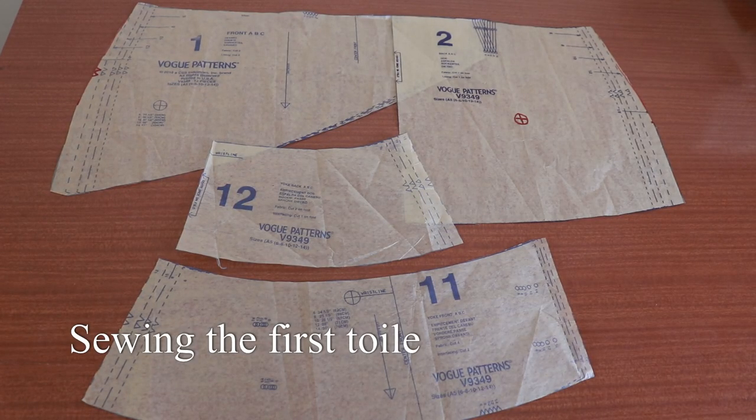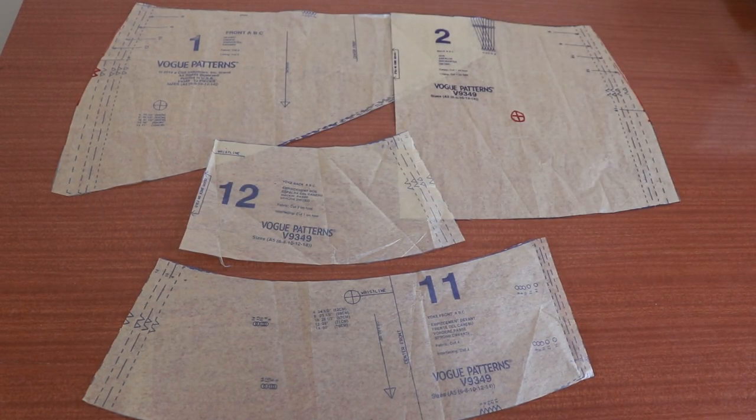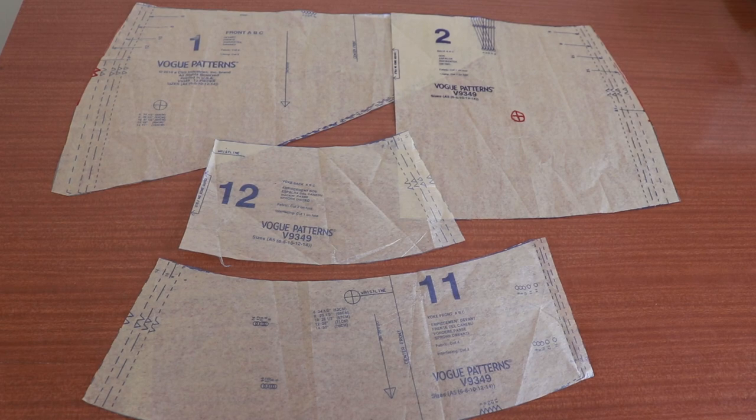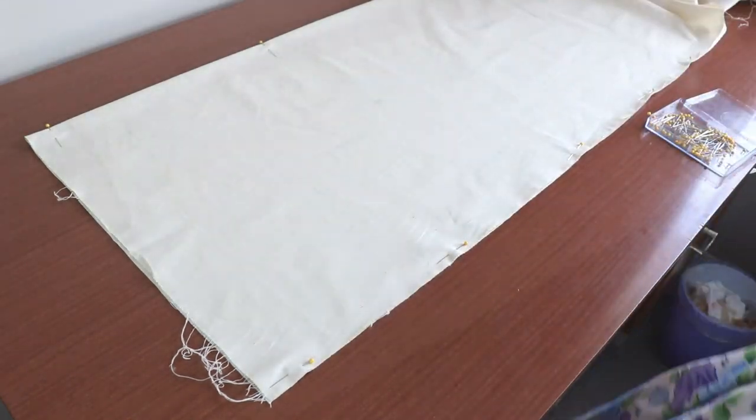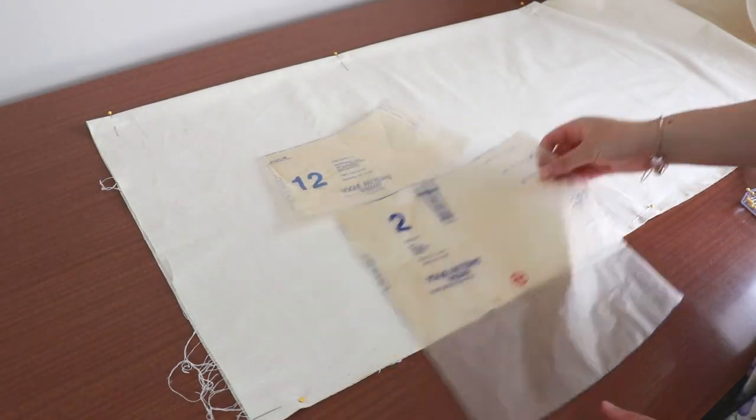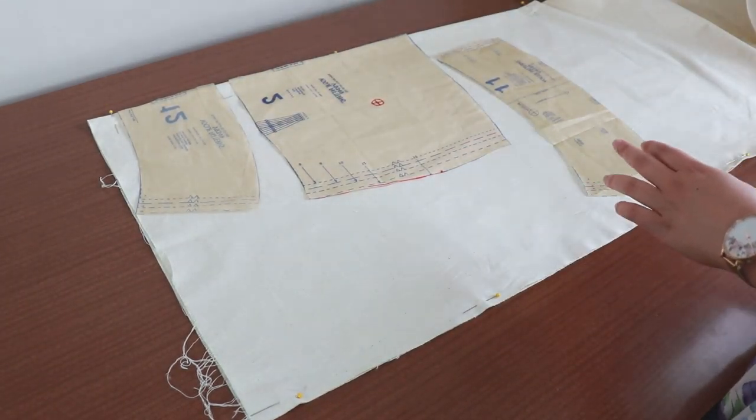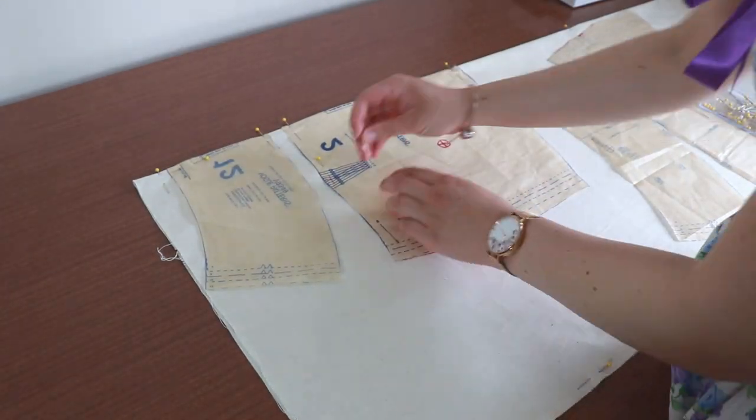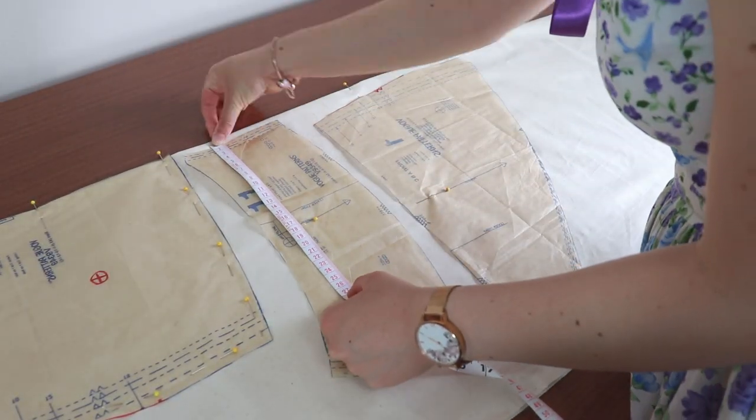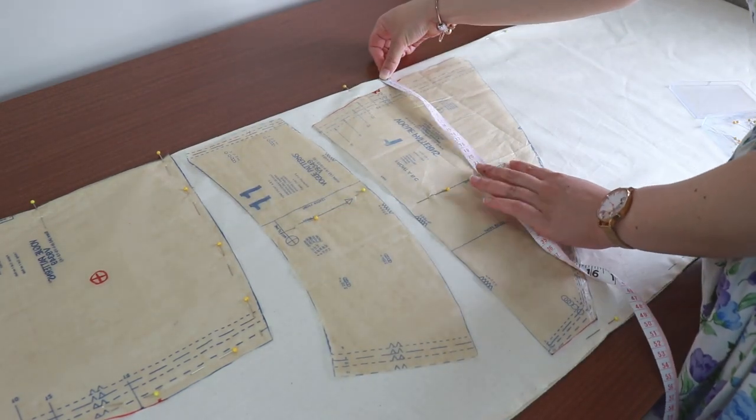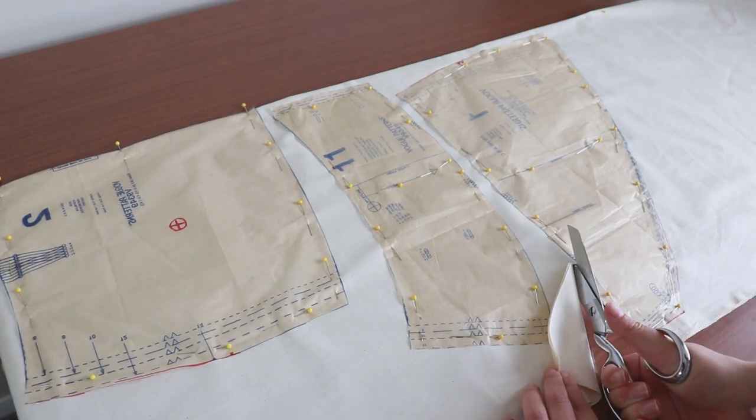I suggest cutting out pattern pieces 1, 2, 11, and 12. These pieces make up the waistband and the fitted part of the skirt around the hips. Grab your toile fabric and fold it in half width-wise. Arrange the pattern pieces onto the fabric to best conserve space. You'll need to cut one copy of piece 2 and 12 on the fold. You also need two copies of pieces 1 and 11. Even though this is still a toile, I suggest matching the grain lines of the pattern pieces to the selvage or fold. Pin and cut these pieces out once you're happy with the arrangement.